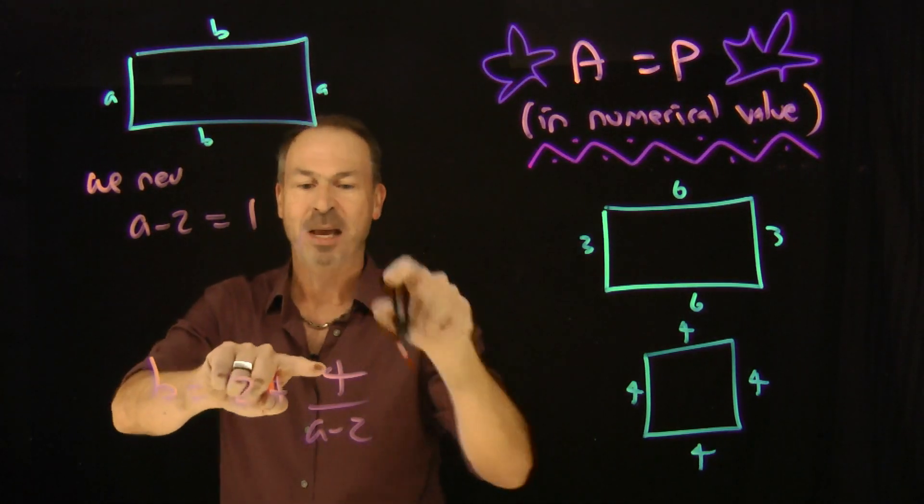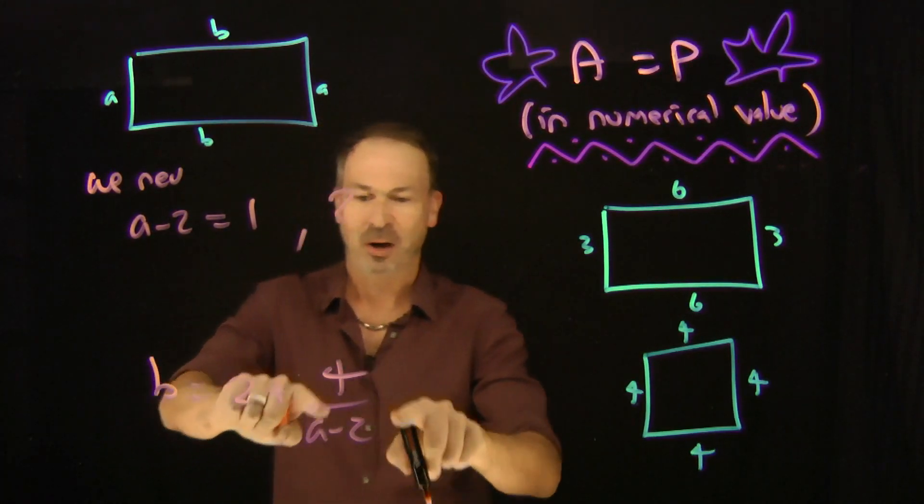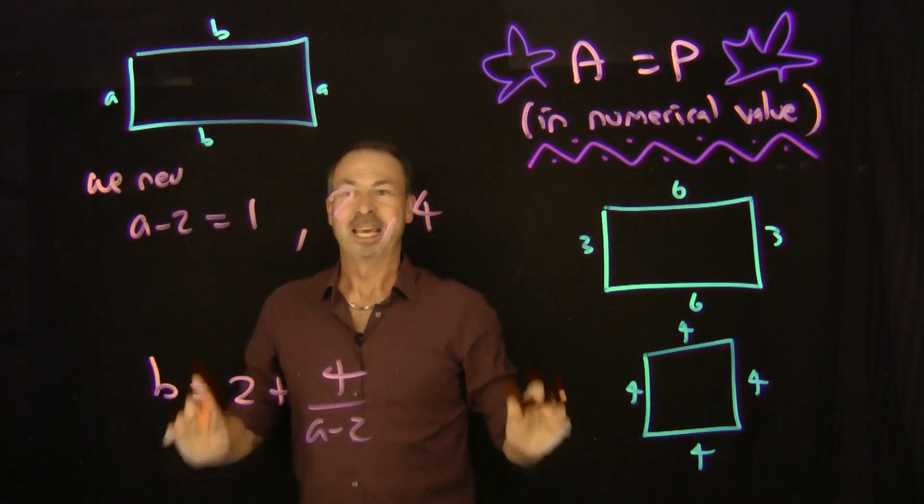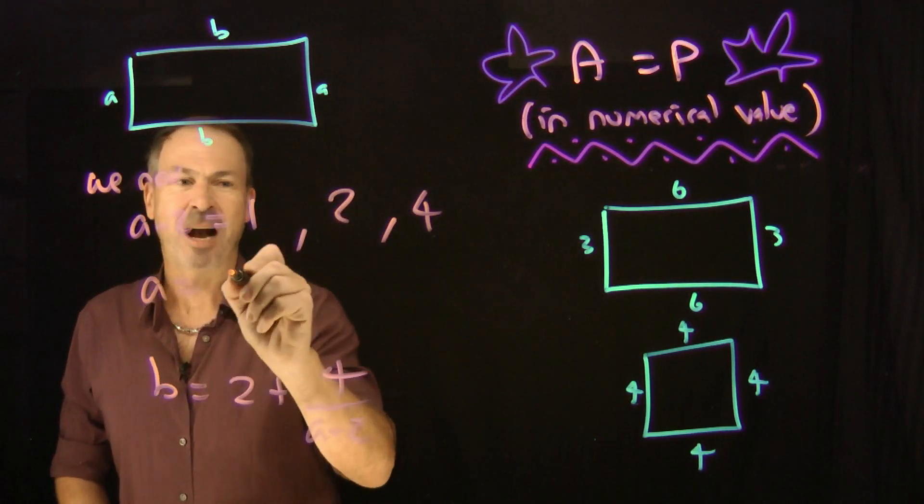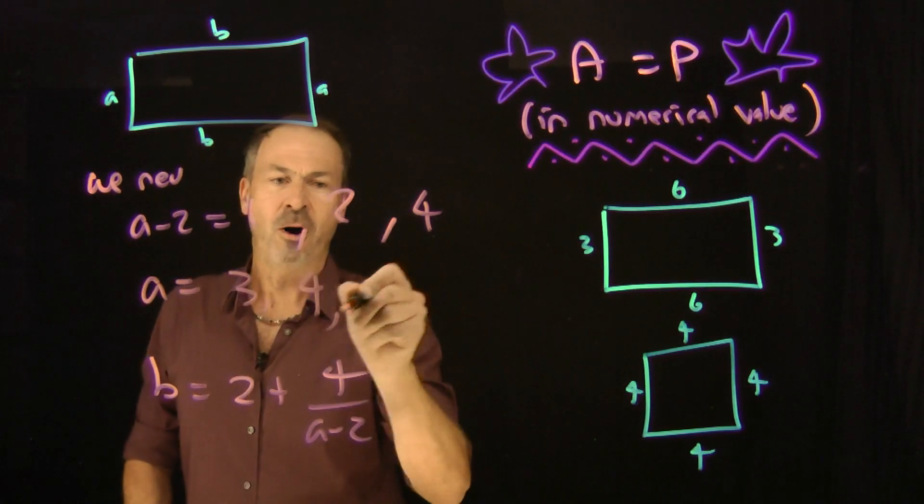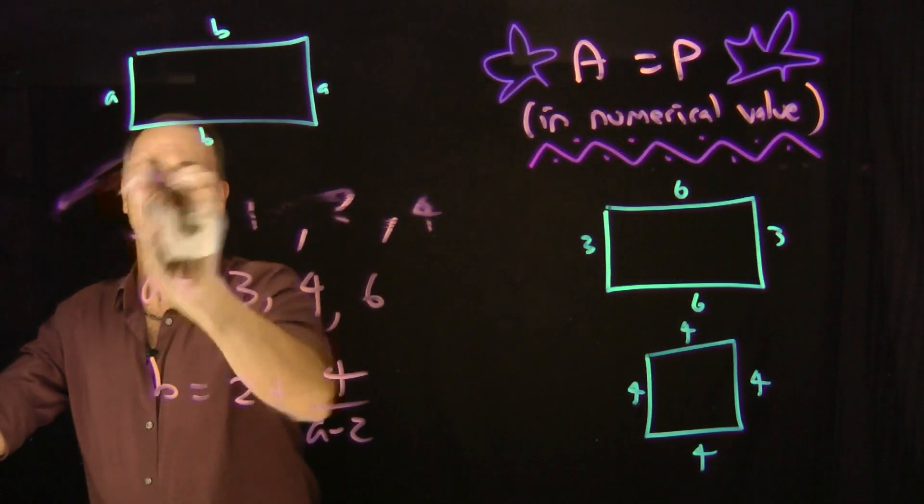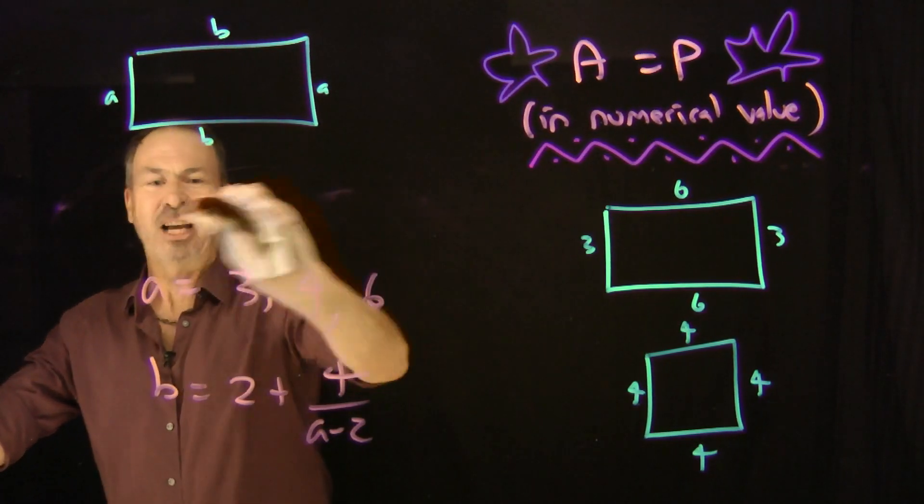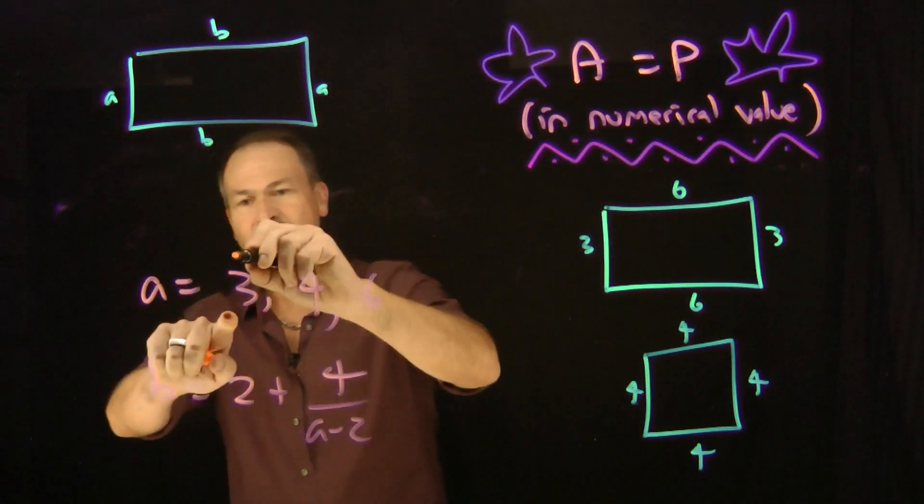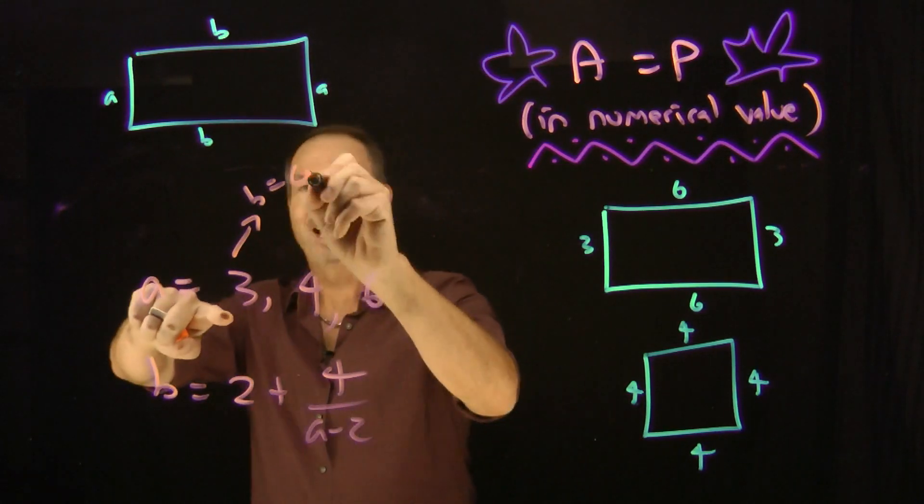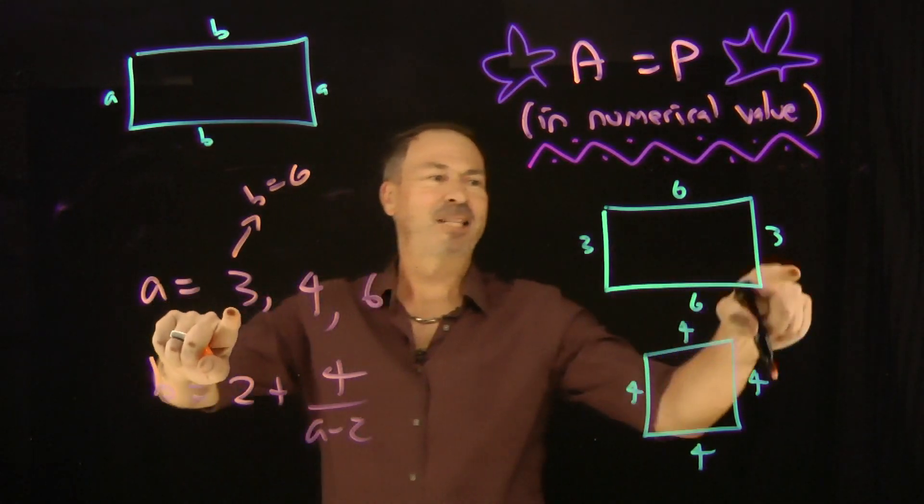It could be 4 over 1, it could be 1. It could be 4 over 2, it could be 2. 4 over 4, it could be 4. And that's it. In which case, a must be either 3 or 4 or 6. And if a actually is 3, then the matching b would be 2 plus 4 over 1, 6. It would be the 3 by 6 rectangle. We got that one.